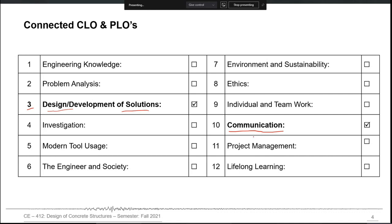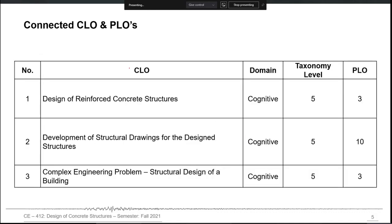These PLOs will be mapped with three Course Learning Objectives or CLOs. The first is the design of reinforced concrete structures — the basic design calculations, design against flexure, design against shear, and design of different members against torsion. The second CLO is the development of structural drawings for the designed structures, where structural detailing comes in. This is also a CLO of cognitive type.